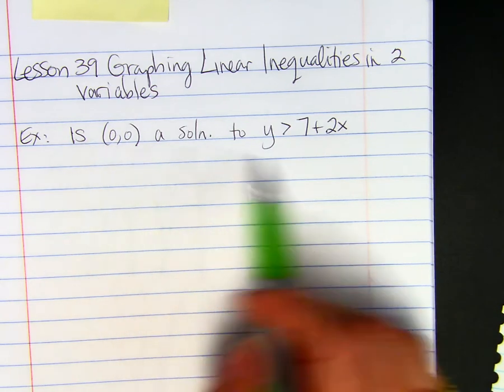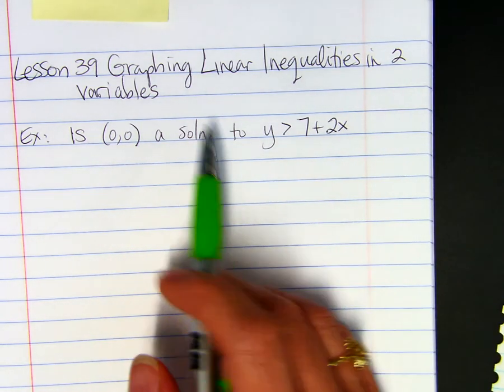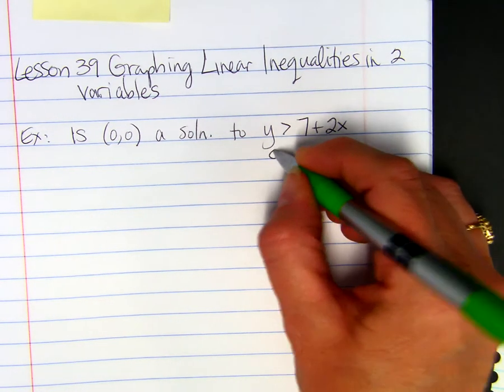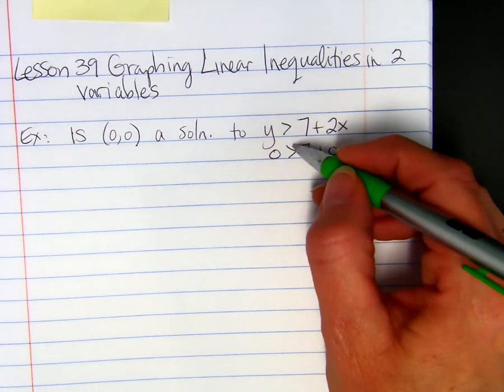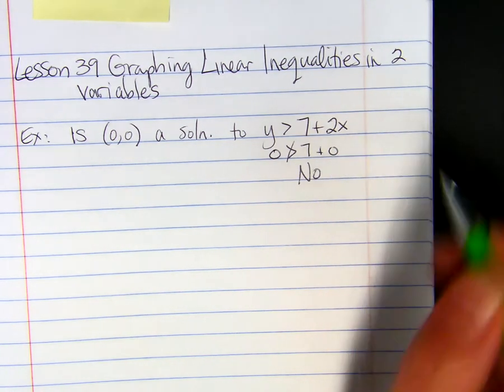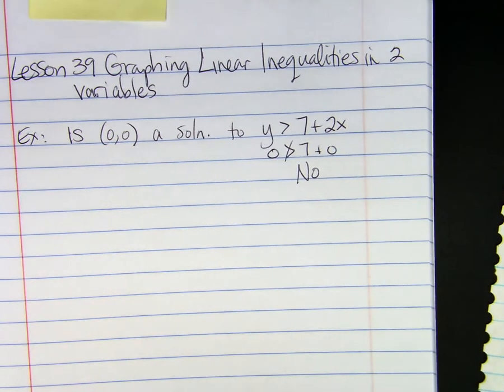So when you're asked a question like this, just plug in for x and y. So then you ask yourself, is 0 greater than 7 plus 0? And the answer is no. So 0,0 would not be a solution to that inequality.